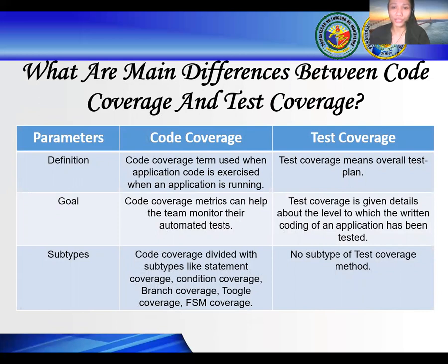Code coverage and test coverage are measurement techniques which allow you to assess the quality of your application code. Here are some critical differences between both coverage methods. Code coverage is the term used when application code is exercised when an application is running, while test coverage means the overall test plan. The goal of code coverage metrics is to help the team monitor their automated tests, while test coverage is about giving details about the level to which the written code of an application has been tested. Code coverage is also divided into subtypes like statement coverage, condition coverage, branch coverage, toggle coverage, and finite state machine coverage.